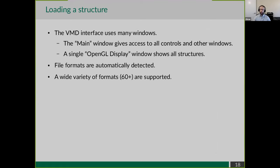The VMD interface uses many windows, but all of them can be found through the main window. The main window is your central viewport - it gives you access to all the controls and all the other windows. There is a single OpenGL window, so if you load several structures, they will all be shown on that single screen. VMD supports a wide variety of file formats, which are automatically detected from file extensions and file contents.